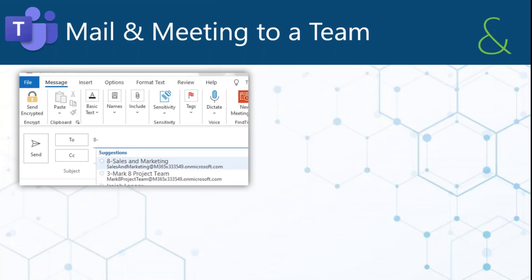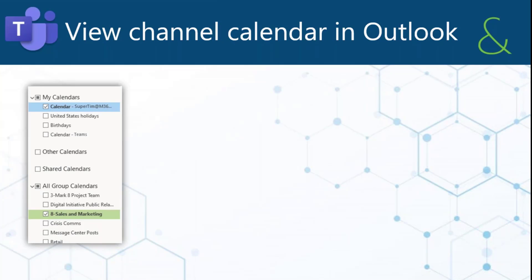If you are working in Teams and you have a team — I call them team sites — you can actually send an email to that whole group. Now you're working in Teams, scheduling your meetings in Teams, but you want that calendar to show up in Outlook. So if you go into Outlook and look at your calendars and scroll down, you'll see group calendars.